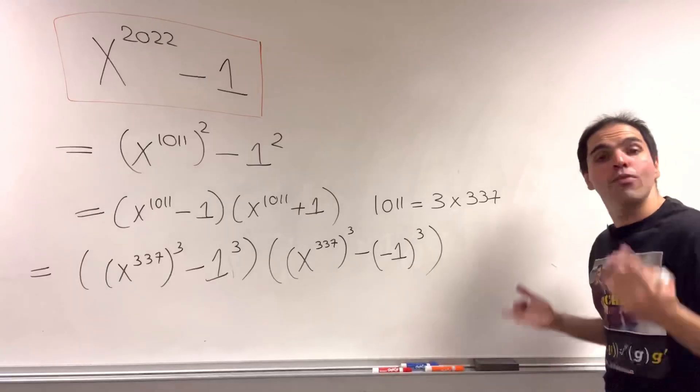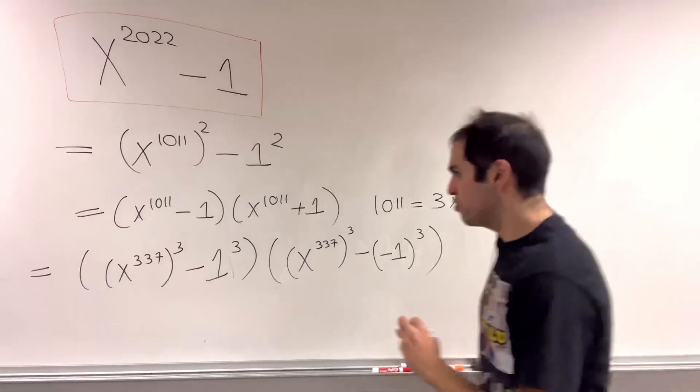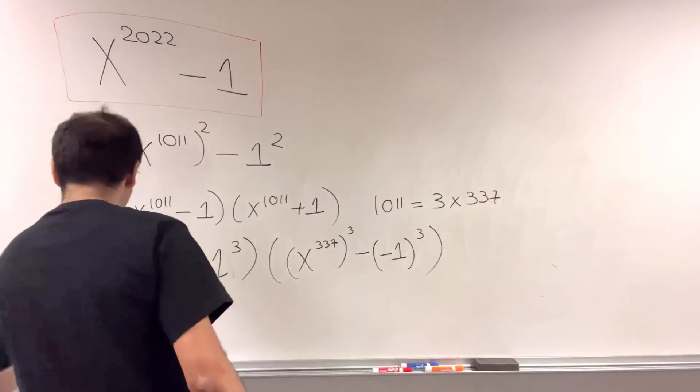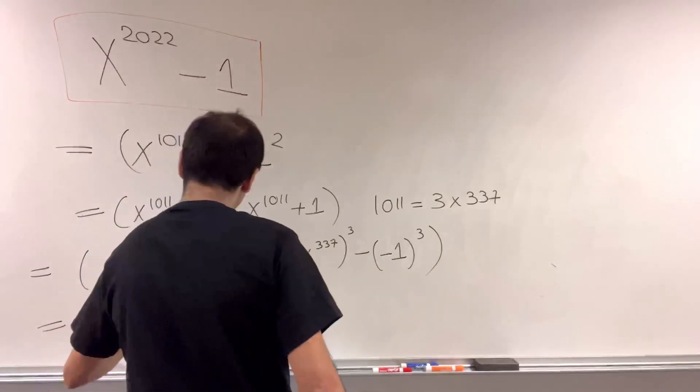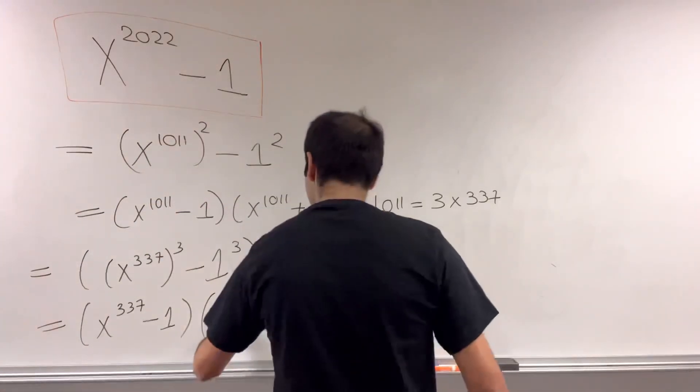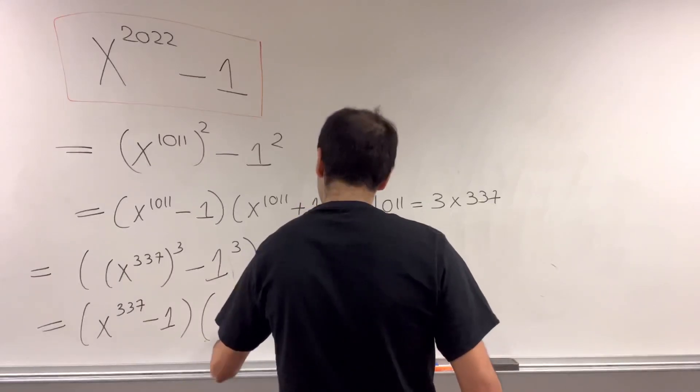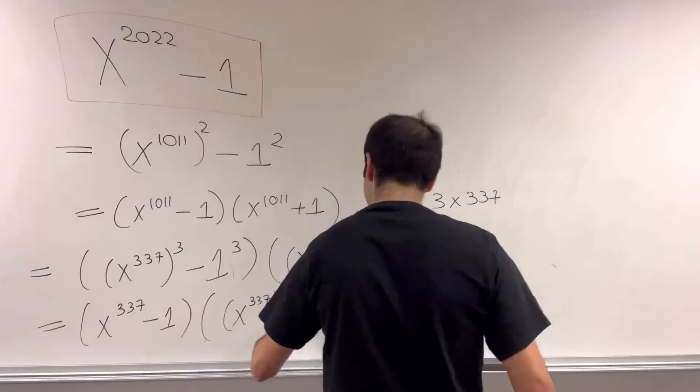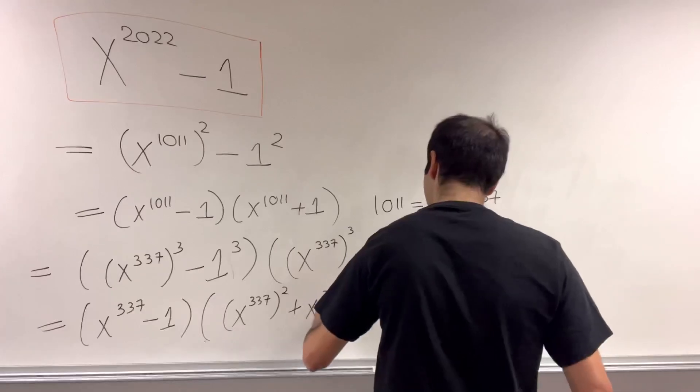And therefore, we can just use the difference of cubes formula. So this becomes x to the 337 minus 1 times x to the 337 squared plus x to the 337 plus 1.